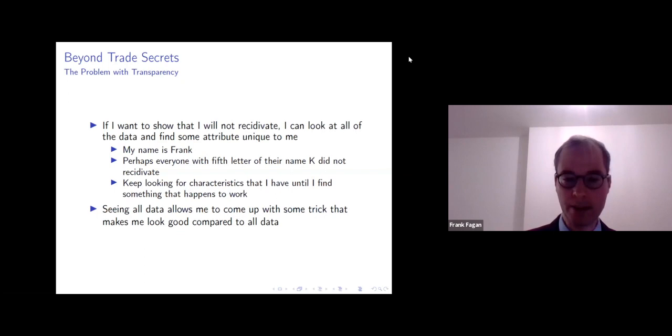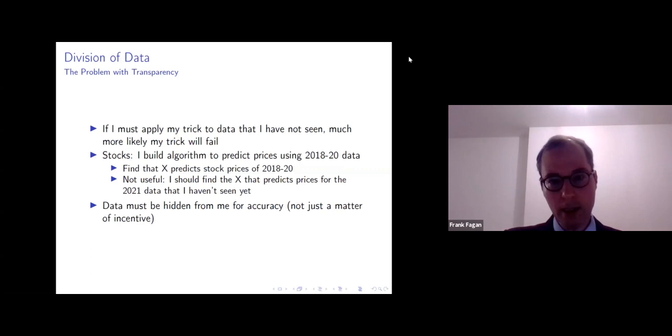I find some characteristic that just happens to work, that just somehow shows that I'm different from everyone else. So somehow it can predict that I won't recidivate on the basis of this unique feature because, quite frankly, the algorithm will be unable to predict whether I'd recidivate if it actually considered that feature. So if I have to apply my trick to data that I haven't seen, it's much more likely that my trick will fail.